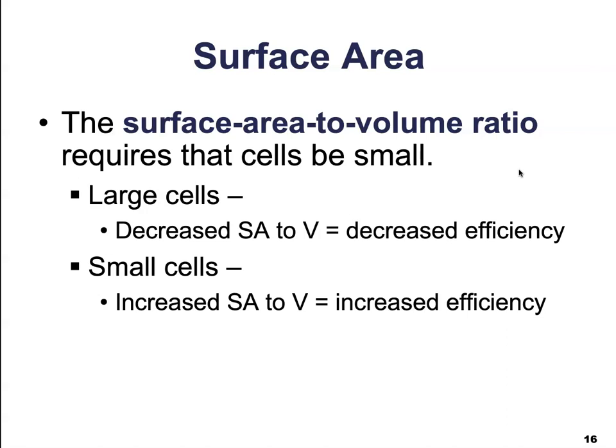That's going to be it for our overview on cells. Next, we're going to divide ourselves into two categories — prokaryotic and eukaryotic cells — and we're going to start to look at some of their structural characteristics.